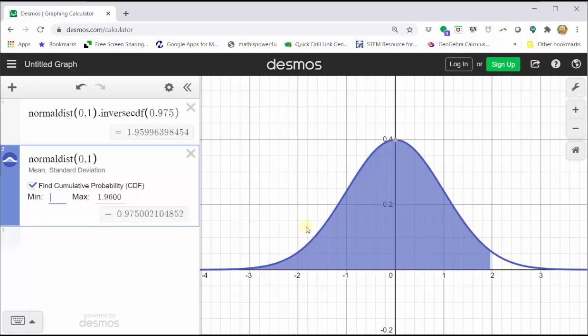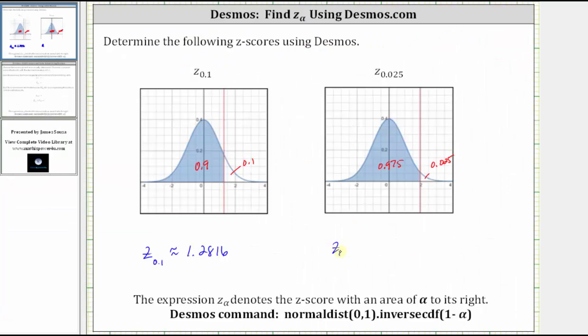We can see the area to the left is approximately 0.975. So let's record this Z-score to four decimal places. Z sub 0.025 is approximately 1.9600.